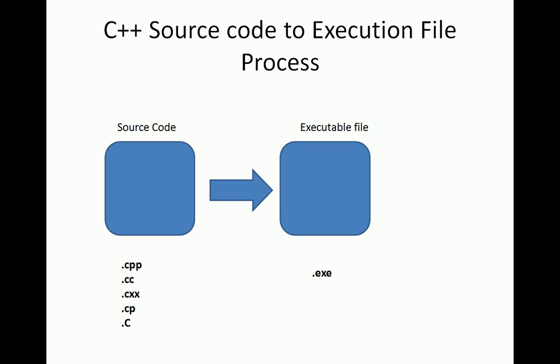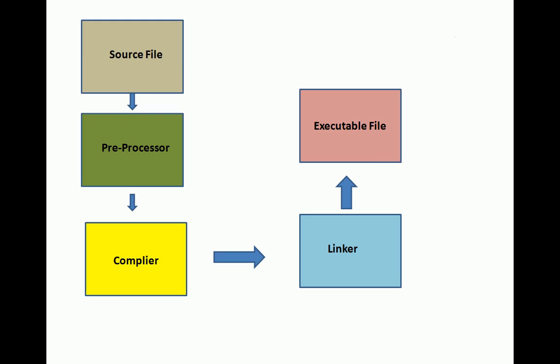The basic process of converting from the source code to the executable file has many steps involved. First, the source file is given to the preprocessor. The preprocessor works on the source file and generates assembly code, which is given to the compiler. The compiler checks the assembly code for syntax errors. If there are no errors, it passes to the linker, which links all the source files with the C++ standard libraries and outputs an executable file.